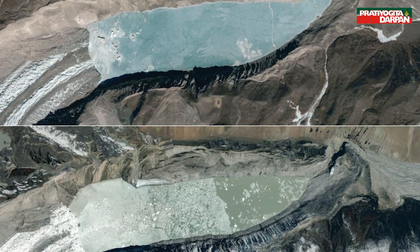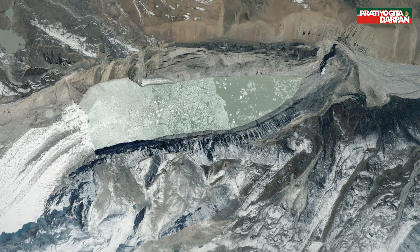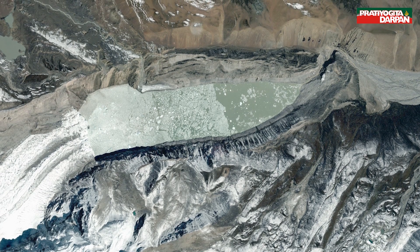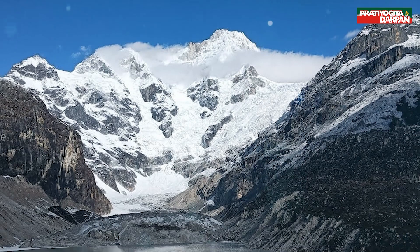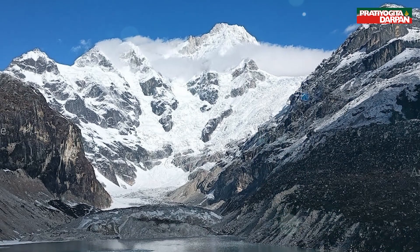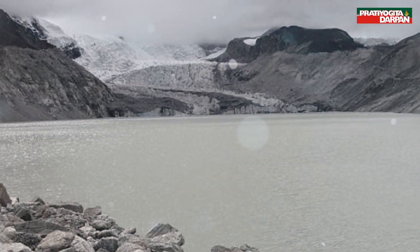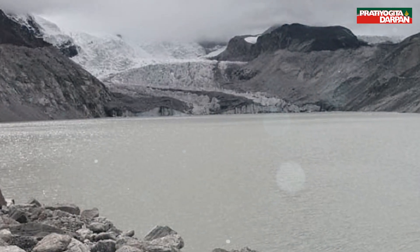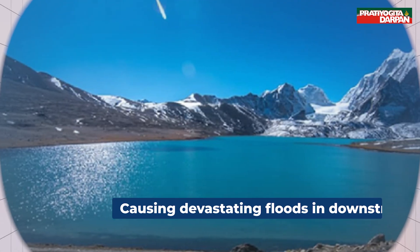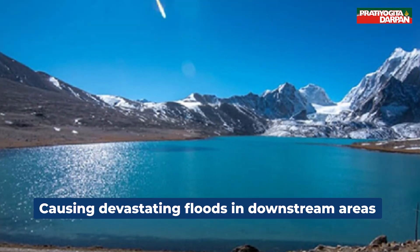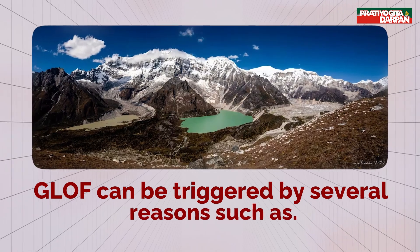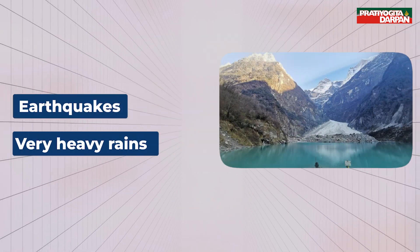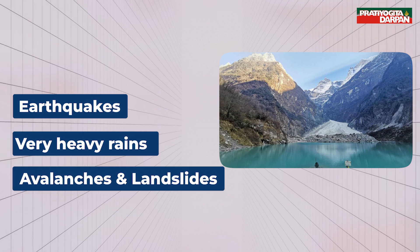As these lakes grow in size, they potentially become more dangerous because glacial lakes are usually dammed by unstable ice or sediment composed of rock and debris. When this blockade breaks, huge amounts of water rush down the slopes of the mountains, causing devastating floods in downstream areas. GLOFs can be triggered by several reasons such as earthquakes, very heavy rains, avalanches and landslides.